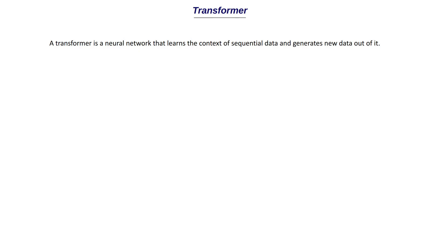A transformer is a neural network that learns the context of sequential data and generates new data out of it. It takes in a sequence of data as input — it can be a text or a prompt — and generates output. For example, if you paste a paragraph in ChatGPT and ask it to summarize, the transformer takes that sequential data as input and generates the summary as output.